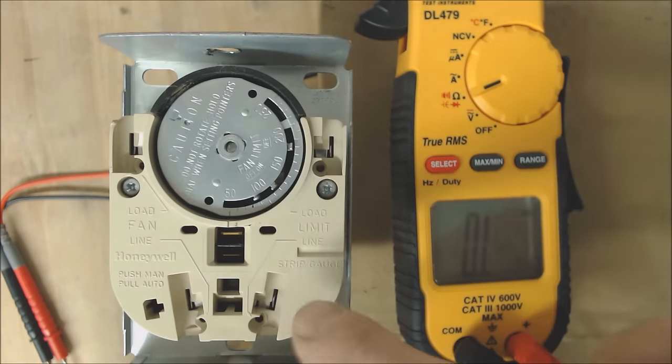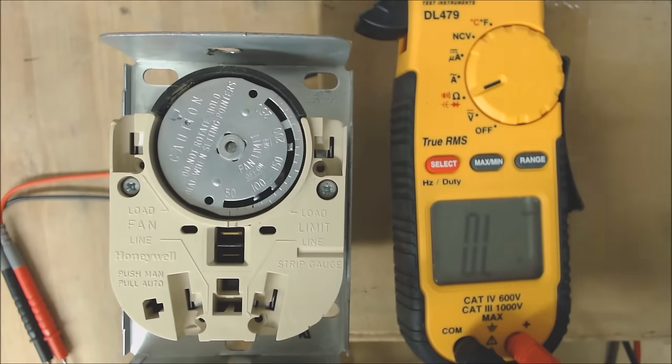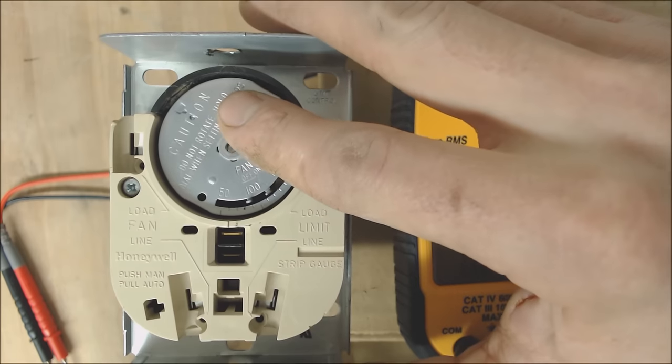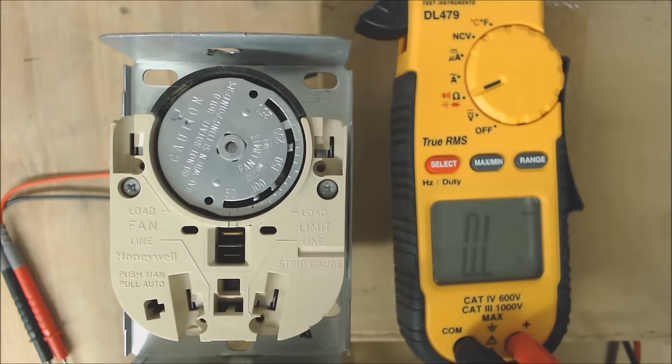Some fan limit controls actually have a jumper. This connection right here is normally open until this turns because it's getting heated up enough to connect the electrical connections for the blower motor to turn on.